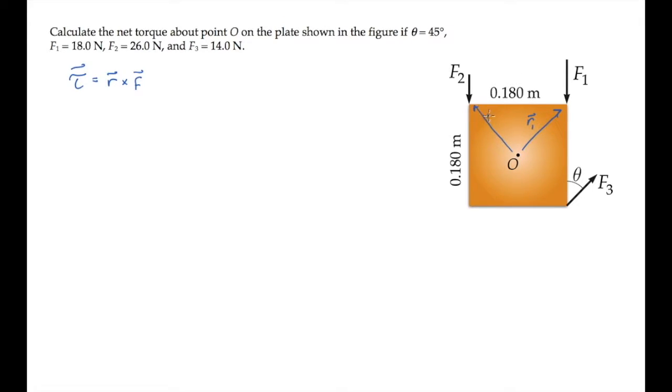So here are the three R vectors, one for each force. The vector torque has a magnitude given by RF sine of phi, where phi is the angle between the two vectors, R and F, and it has a direction given by the right-hand rule.